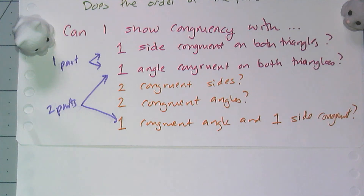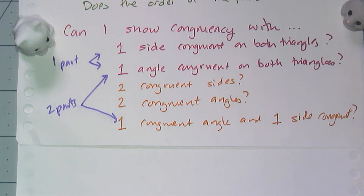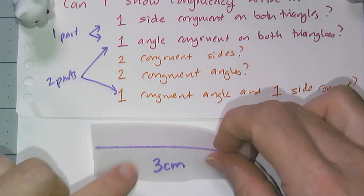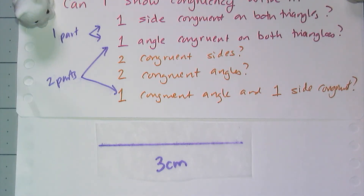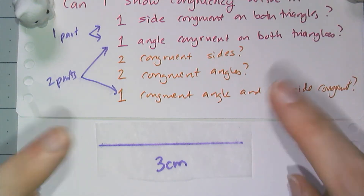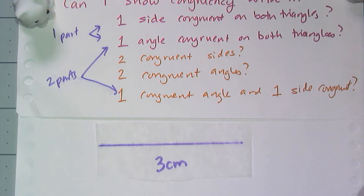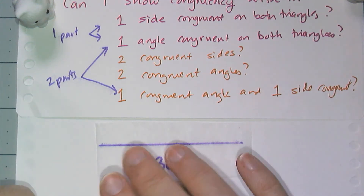Let's start off real simple. If I have two triangles where one side is congruent on both triangles, are those two triangles congruent? The answer is obviously no, because if I have two triangles both with a three-centimeter side length, how many triangles can I construct that have a side length of three centimeters? The answer is a lot. So having only one side congruent — not a shortcut.